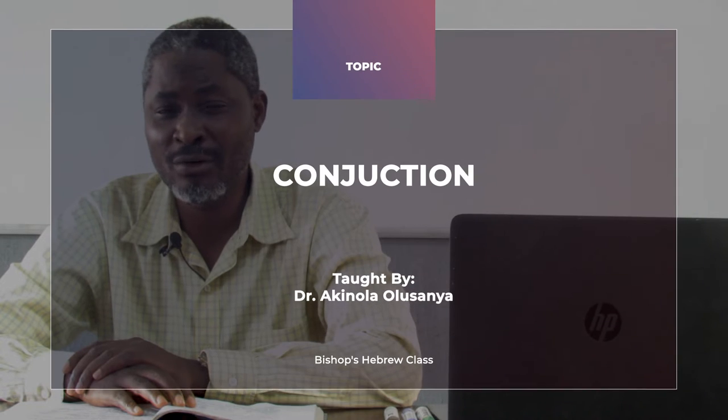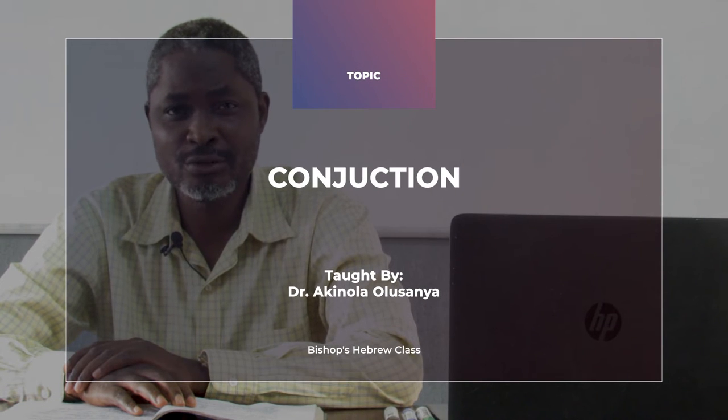Welcome back to class. We want to look now at the conjunction in Hebrew. The conjunction in Hebrew is 'waw,' which means 'and.' It is an inseparable particle, pointed like prepositions. We want to look at how 'waw' is used to conjoin words together in biblical Hebrew.